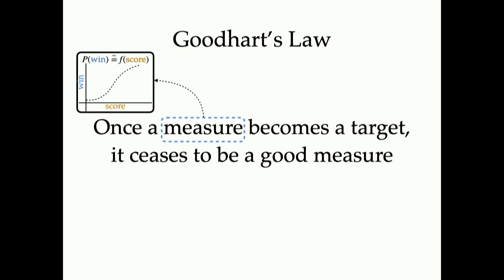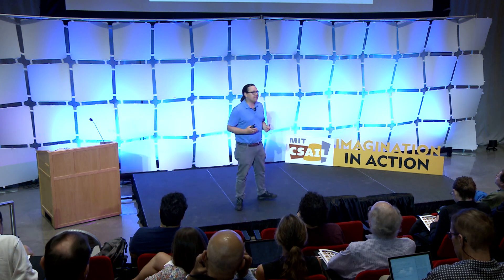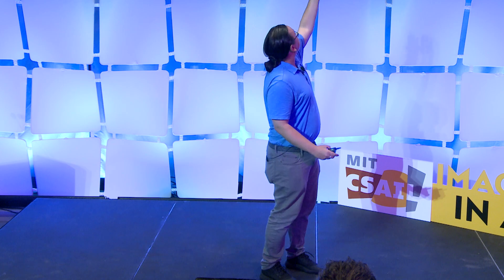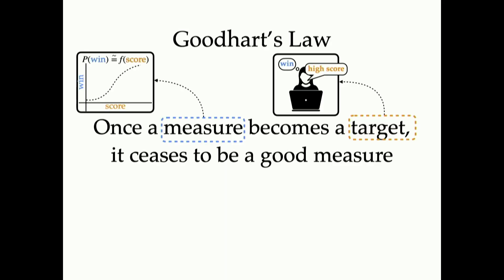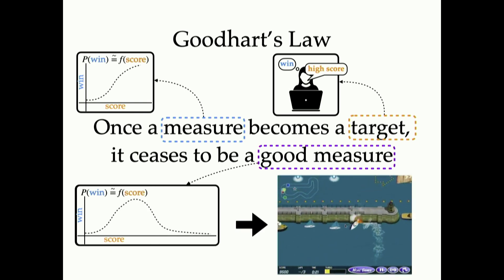So what do we mean by this? When we say measure here, we're talking about some way of measuring something in the world, or identifying some property. In this case, we identified a relationship between score and the probability of winning. When we set something as a target, that means we set it as a goal for some sort of optimization driven system. In this case, the system designer saying, get a high score to this reinforcement learning problem. And what does it mean that it ceases to be a good measure? As we optimize that score function, we find that this relationship stops holding. And eventually we get this boat spinning in circles over and over again.